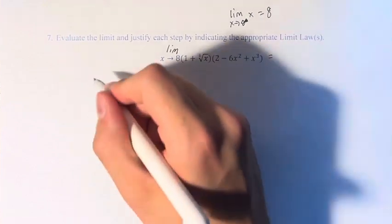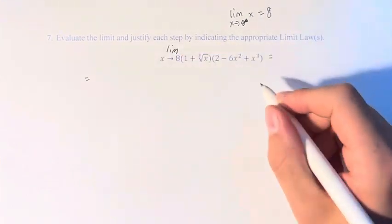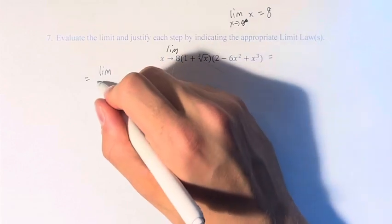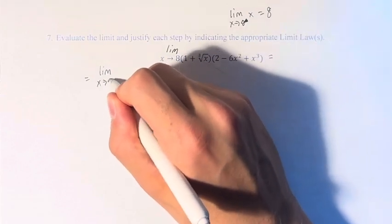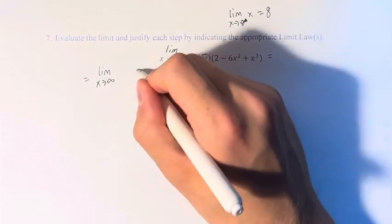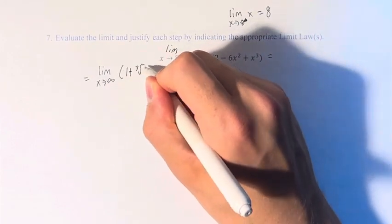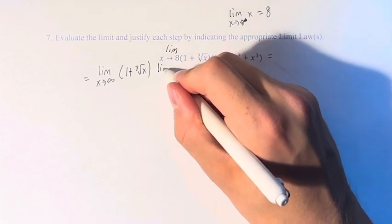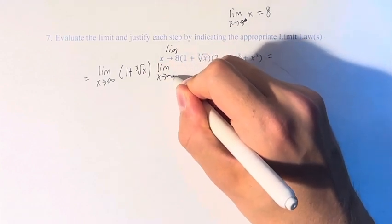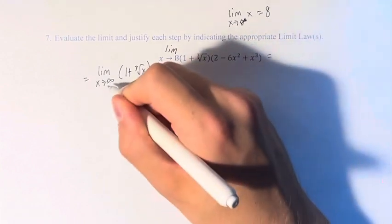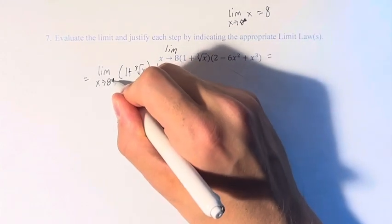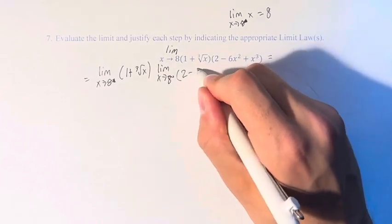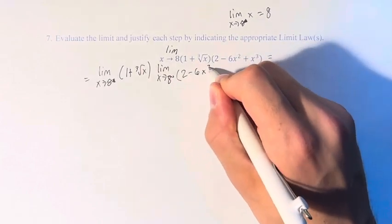The first step is to turn this product into the product of its individual limits. So we take the limit of 1 plus the cube root of x, times the limit as x approaches 8 of 2 minus 6x squared plus x cubed.